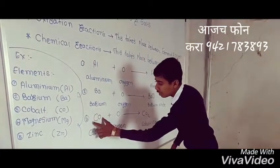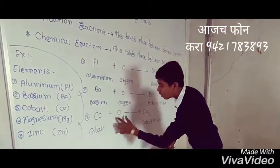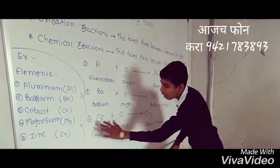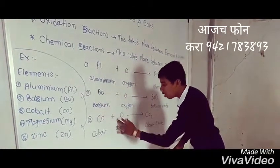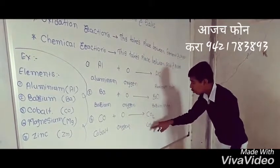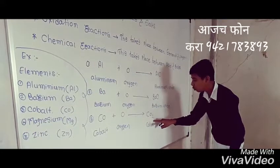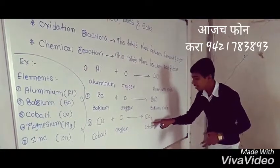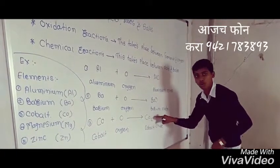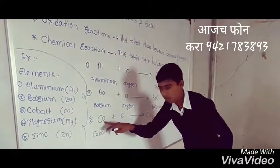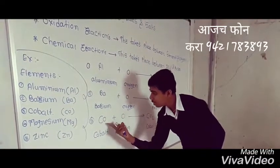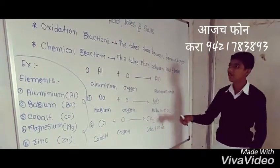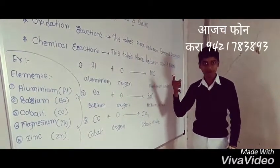Here is the third reaction. Co means cobalt and O means oxygen. When cobalt reacts with oxygen, we get cobalt oxide. I write CO2 because here is Co and here is O, making 2O — that is why I write CO2. This is very important for our future, so let's remember. Thank you.